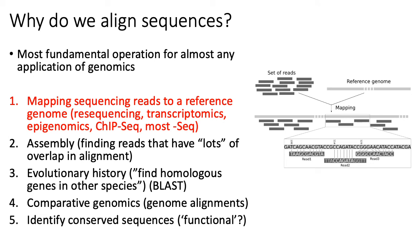Sequence alignments have many applications in genomics. Because DNA sequencing — at least short read sequencing — produces tons of short reads, you do alignments to figure out where on your genome each read came from. You start with a bunch of reads and a reference genome, like the reference human genome, and align your reads to figure out where they came from. One major application is mapping sequencing reads to a reference genome.